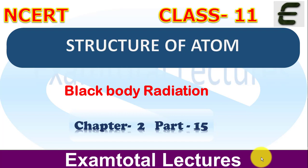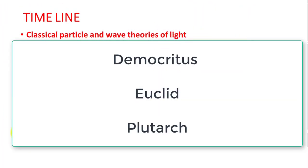Welcome to Exam Total Lectures. This video is Chapter 2 of Class 11, Part 15. In this video we are going to learn about black body radiation. We have covered electromagnetic waves in the last few videos on the wave character. Now we look at the particle nature of electromagnetic radiation. The story of light's dual character did not start this way — let's see the timeline of how it evolved. This is not part of the syllabus but is important for general knowledge.